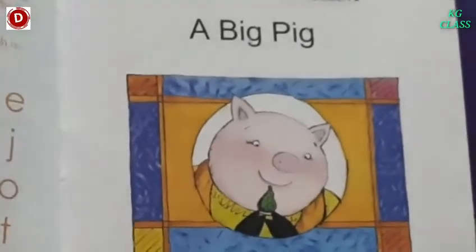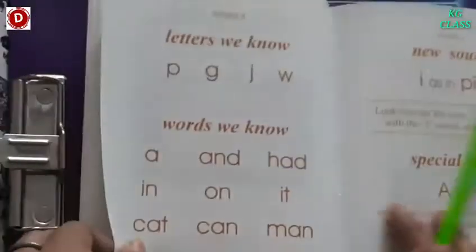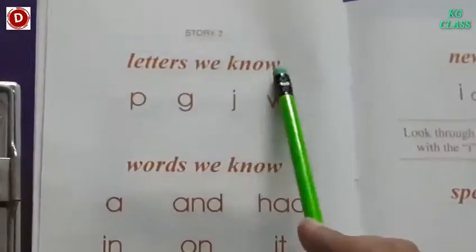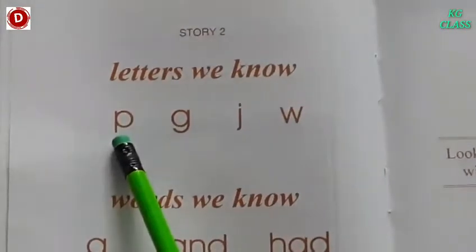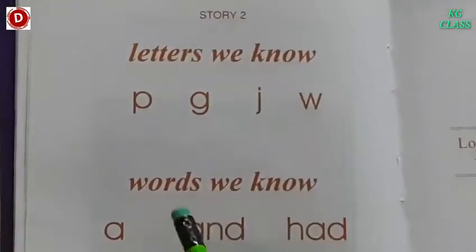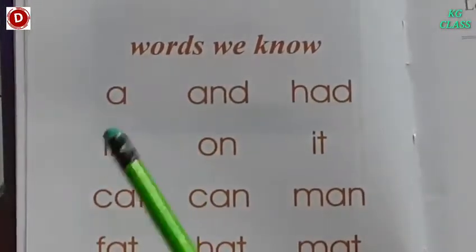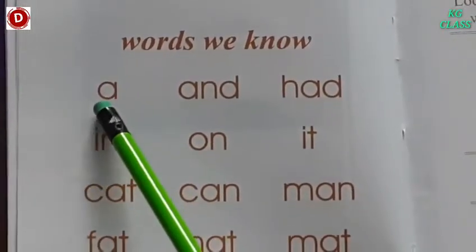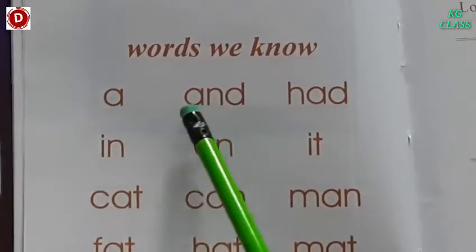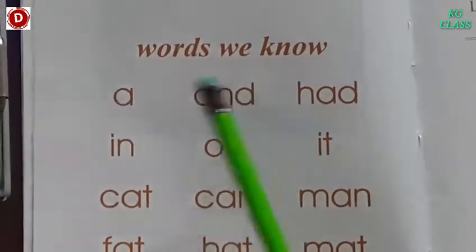Now we will turn the page. After 17 comes 18. Now see, children — letters we know. Which letters do we know? P, G, J, W. Now words we know. Let's read these words. This is 'a'. And — A, N, D — and.